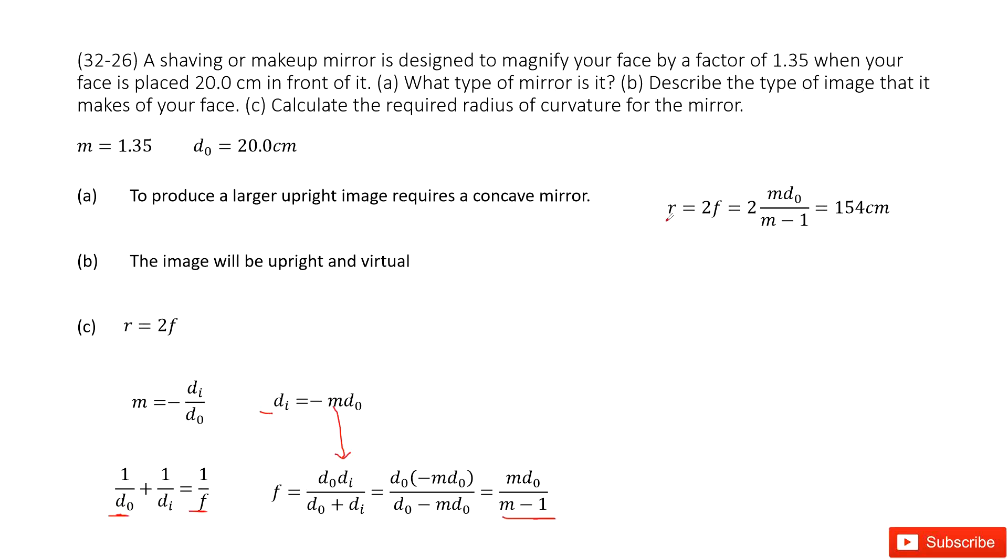Now we use radius equals 2 times focal length. Input the focal length, and we get the terms about the radius with m and do. As we can see, m and do are given, so you input all the given quantities and get the answer.